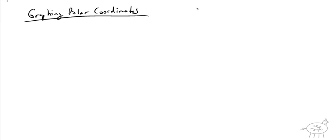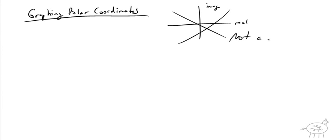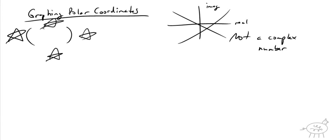Even before we get started, we've talked about complex numbers — this is not a complex number. So when we've been graphing, you had your imaginary axis and your real axis. This is not a complex number. I can't stress this enough. When I say graphing polar coordinates, it's going to be in parentheses. You've got to look for the parentheses, because if I ask you to convert a polar coordinate to a rectangular coordinate, you're going to have parentheses — something comma something.